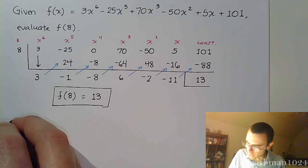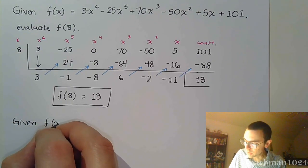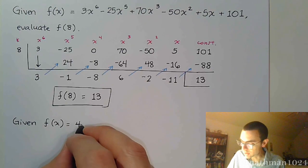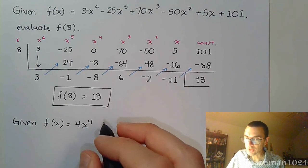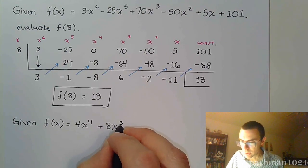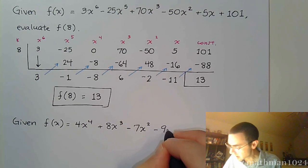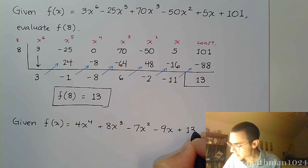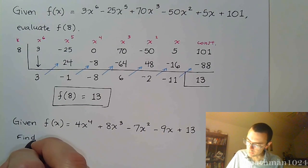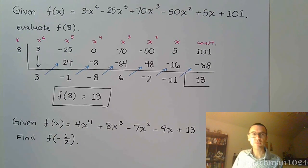Okay. So, let's do another example. We've got a few more examples to run through. Really shouldn't take us too terribly long to do that. I'm not saying they're all the same, but it kind of gets to be a pattern, it gets to be a habit. So, f(x) equals 4x^4 + 8x^3 - 7x^2 - 9x + 13. And I want you to find or evaluate f(-1/2).